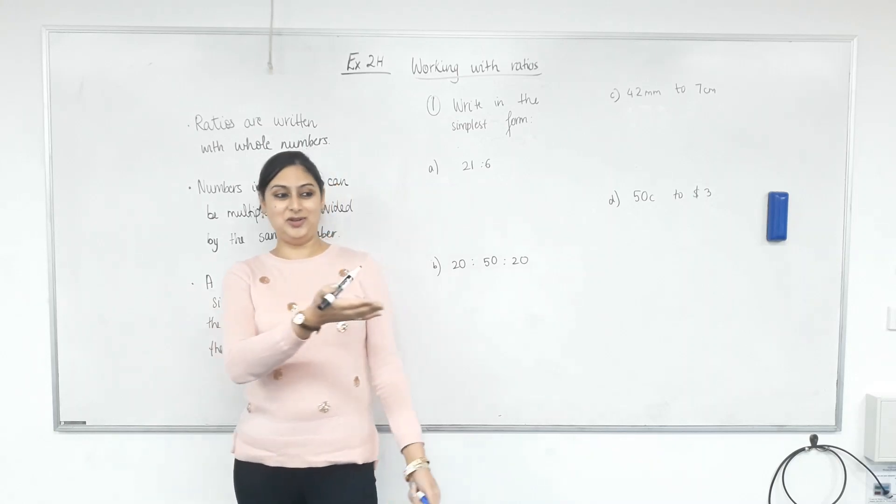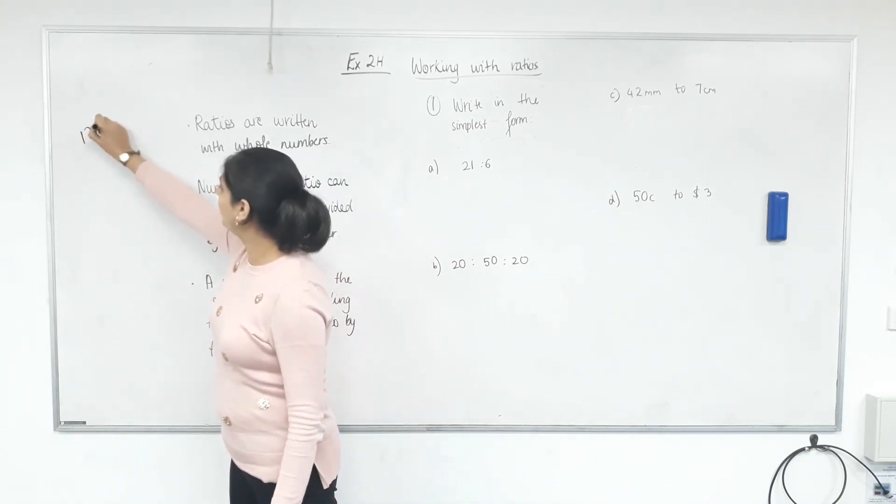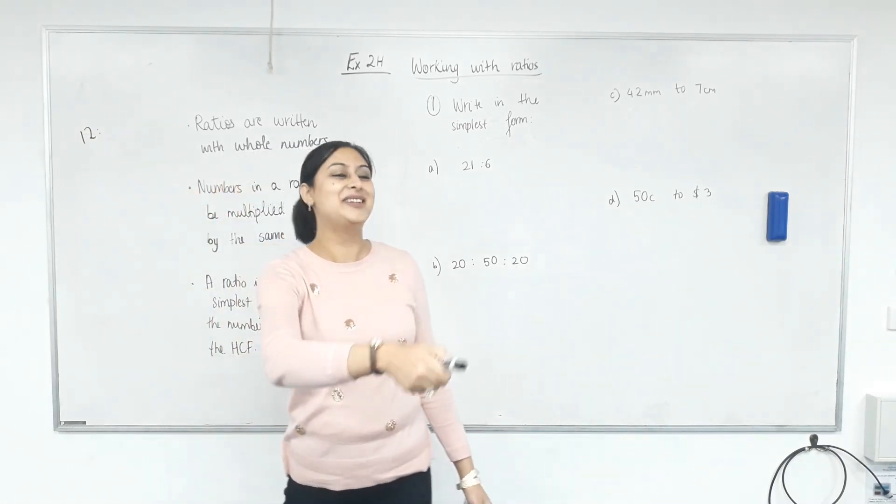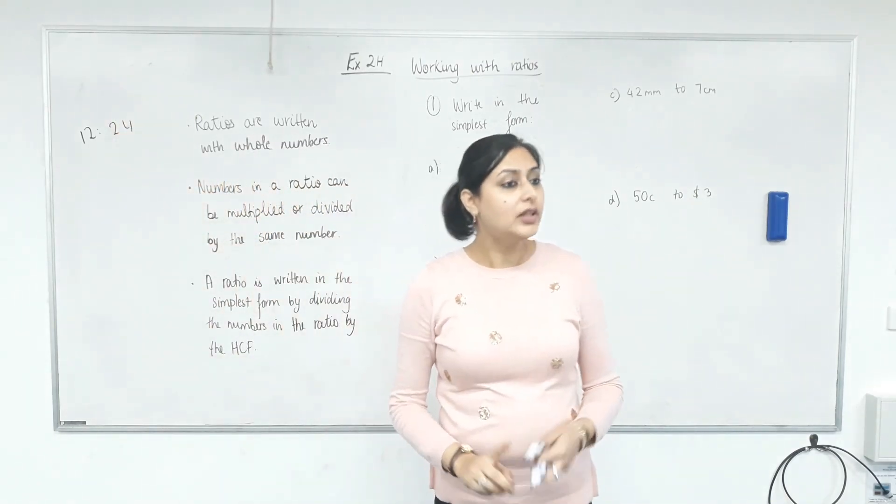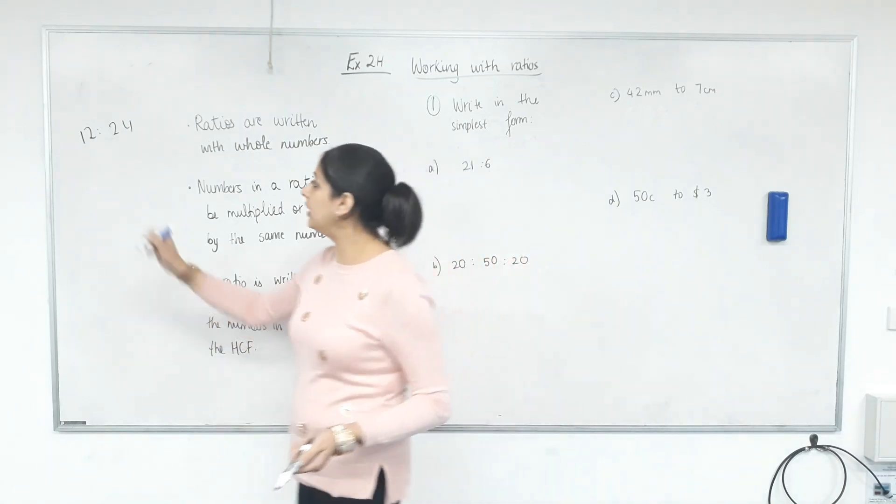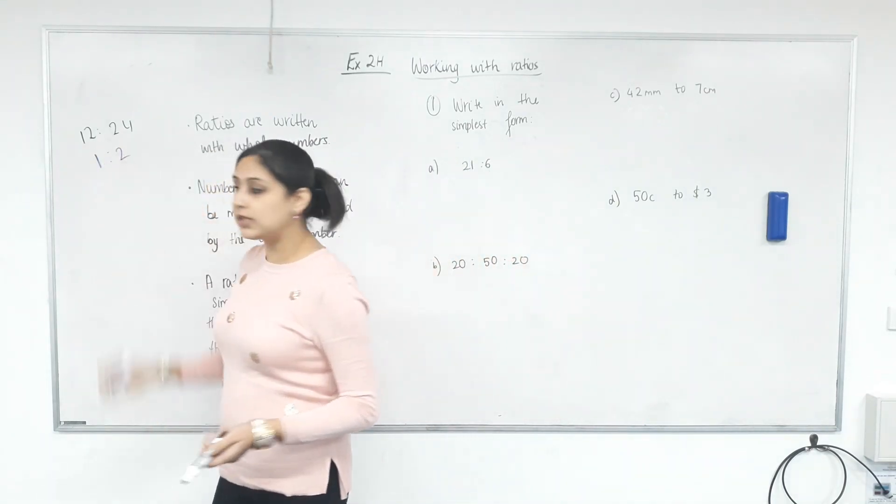For example, again, how old are you? 12. Same favorite example. How old am I? 24. Well done. I'm actually doing the same. Favorite class. Now, so I need to write this ratio. That means I am twice as old as you?